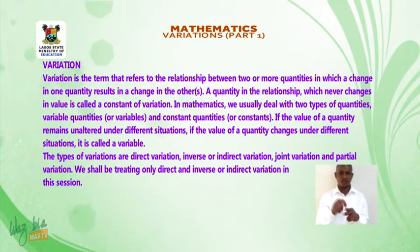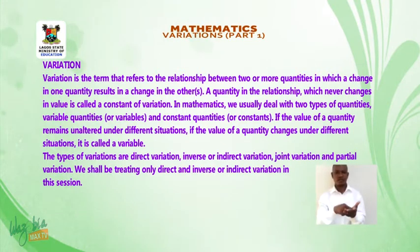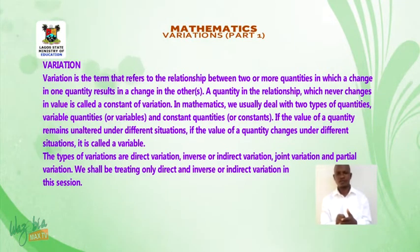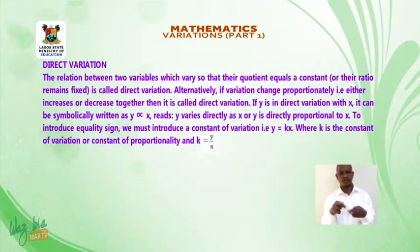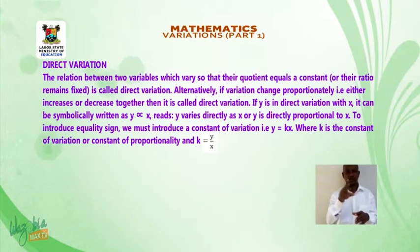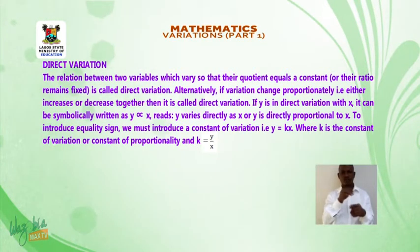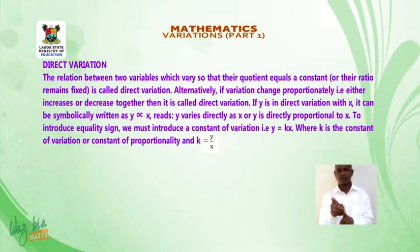We shall be treating only direct and inverse or indirect variations in this session. Direct variation: the relation between two variables which vary so that their quotient equals a constant, or their ratio remains fixed, is called direct variation.